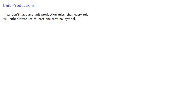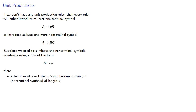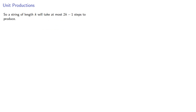If we don't have any unit production rules, then every rule will either introduce at least one terminal symbol — A produces b — or introduce at least one more non-terminal symbol — A produces BC. But since we need to eliminate the non-terminal symbols eventually using a rule of the form A produces a terminal symbol, then after at least one step, S will become a string of non-terminal symbols of length k. After at least one more step, this will become a string of terminal symbols of length k. And so a string of length k will take at most 2k minus one steps to produce.